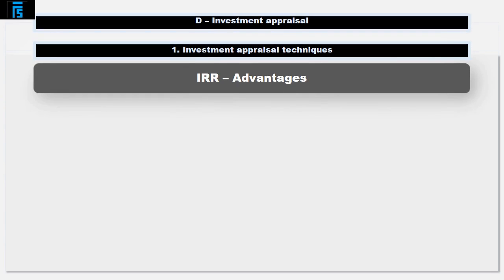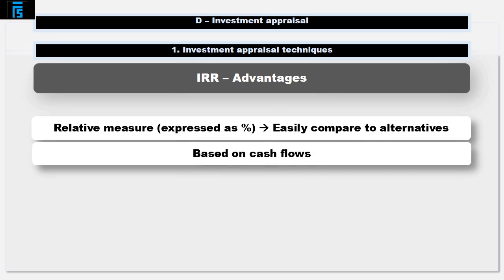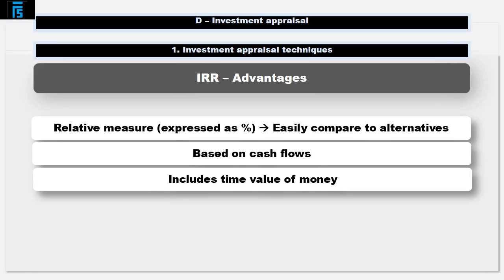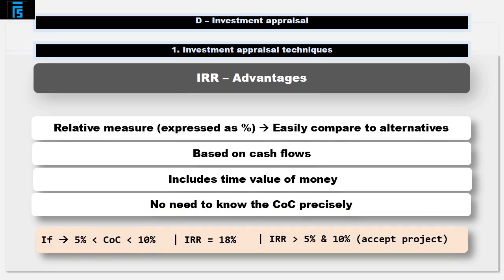IRR has several advantages. It's a percentage, and managers like percentages because they can easily be compared to other alternatives. It's based on cash flows and includes the time value of money. You don't need to know the cost of capital precisely to use it. For example, if you feel your cost of capital is somewhere between 5 and 10% and you calculate the IRR as being 18%, then you'd be safe in saying let's go ahead, as 18% is higher than the entire range from 5 to 10%.